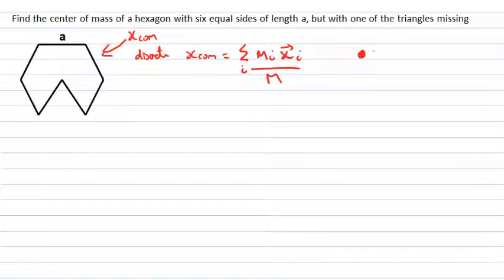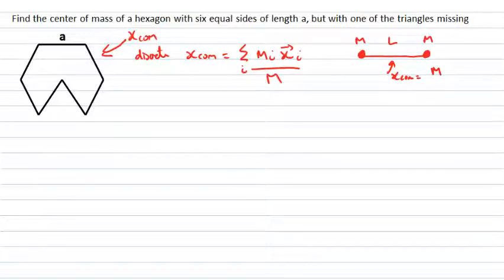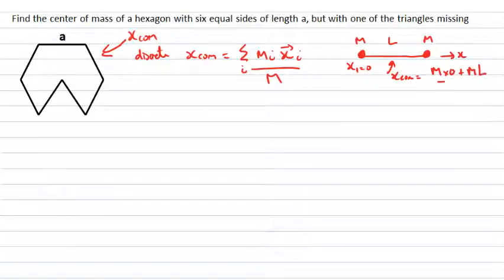That might work in one dimension — say if you have two masses m and m separated by some length l. We can work out that the center of mass is given by the first mass times its position: with x1 equals zero, that's m times zero, plus the second mass m times its position l, divided by the total mass 2m. The m cancels and we get the center of mass position as l over two. That makes sense.